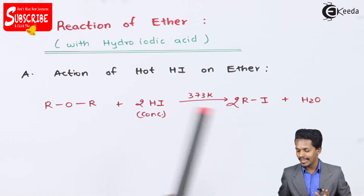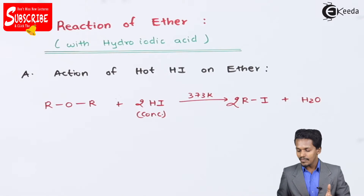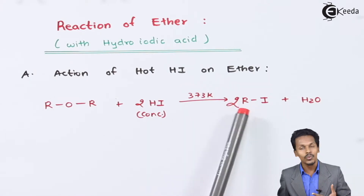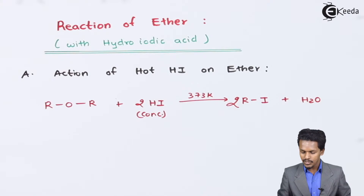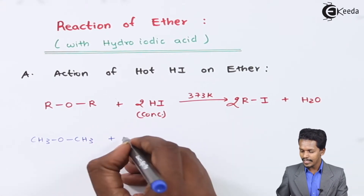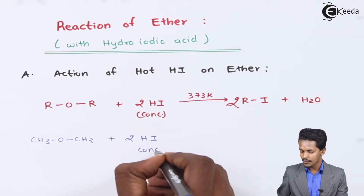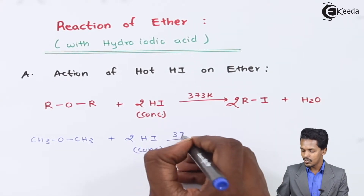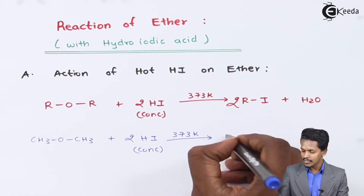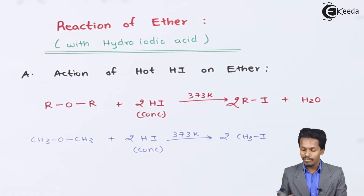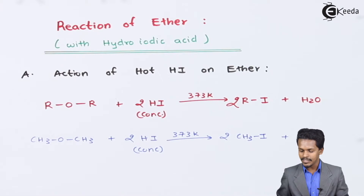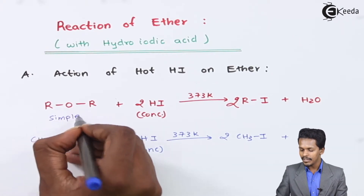Since both alkyl groups are the same, both can be converted into alkyl halide. For example, CH₃OCH₃ treated with two moles of concentrated HI at 373 Kelvin gives two moles of CH₃I (methyl iodide) along with water as a by-product. This is the reaction of a simple ether with hot HI.